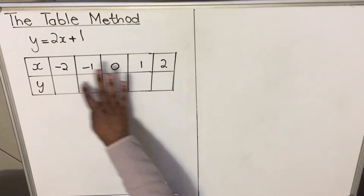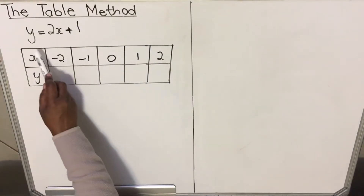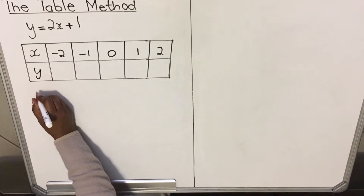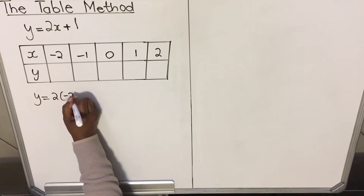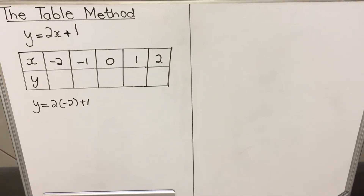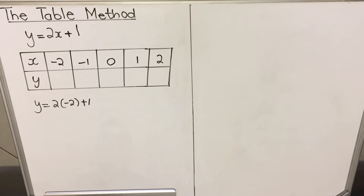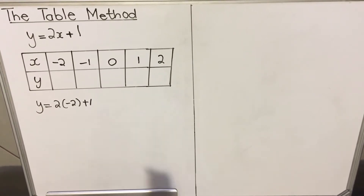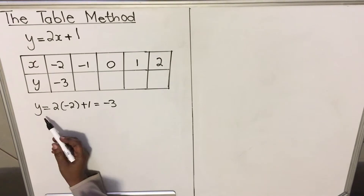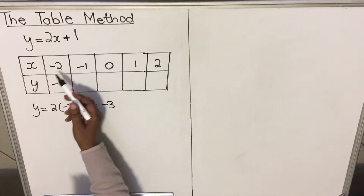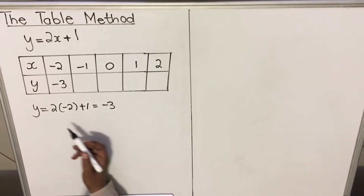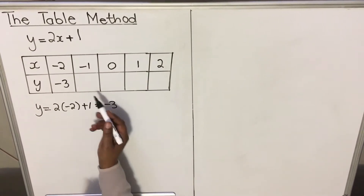Let's calculate the output values. For the first value, y equals 2 times x. When x is -2, y equals 2 times -2 plus 1. Using your calculator: 2 times -2 plus 1 gives you -3. Put that in your table. You don't have to show full working — you only get one or two marks for the whole table, so use the calculator to get all the values efficiently.